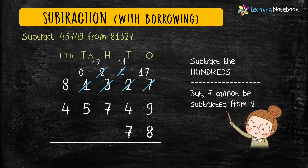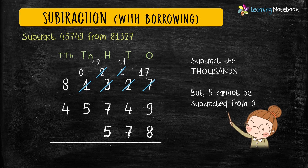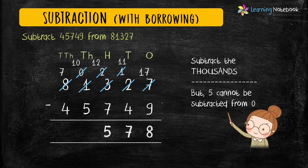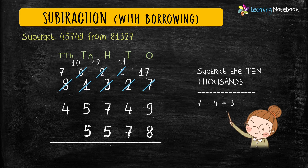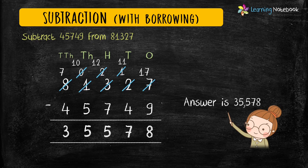Now let's subtract the digits at the thousands place. But 5 cannot be subtracted from 0, so let's borrow from the ten-thousands place. 8 becomes 7 and 0 becomes 10. 10 minus 5 equals 5. Then at the ten-thousands place: 7 minus 4 equals 3. So we have got the answer as 35,578.